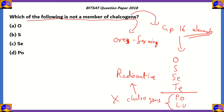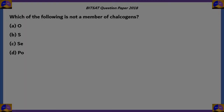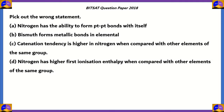Polonium is the only radioactive option among the choices. Options A, B, and C — oxygen, sulfur, and selenium — are present in chalcogens and are not radioactive. Therefore option D (polonium) is the correct answer, as we need to find which one is not a member of chalcogens.